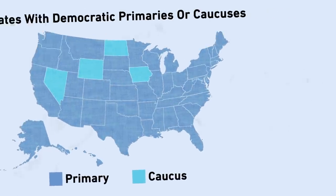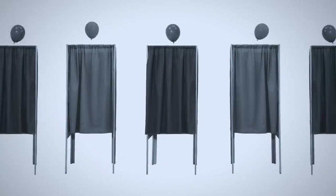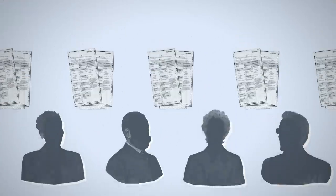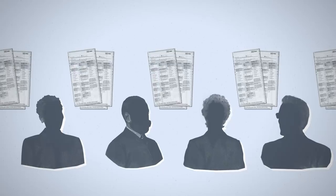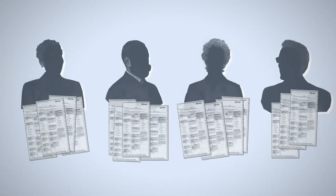Primaries are pretty straightforward — they're very similar to how we vote in general elections. There's a statewide election, voters go to the polls, and they get to indicate on a secret ballot who they want the nominee to be. Those votes are then tallied up and delegates are given to candidates accordingly.